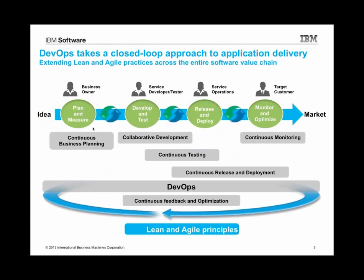DevOps tries to take a feedback-driven approach to breaking down these barriers. It takes the lean and agile practices that we're all aware of and applies them across the different domains or stakeholders: people in the business, development, operations, and even target customers. The idea is to get a continuous feedback and optimization loop by extending lean and agile practices across the whole life cycle. There's continuous testing and continuous release and deployment that span across development and operations — these are some of the practices you can apply to achieve a DevOps approach to delivering continuous software.